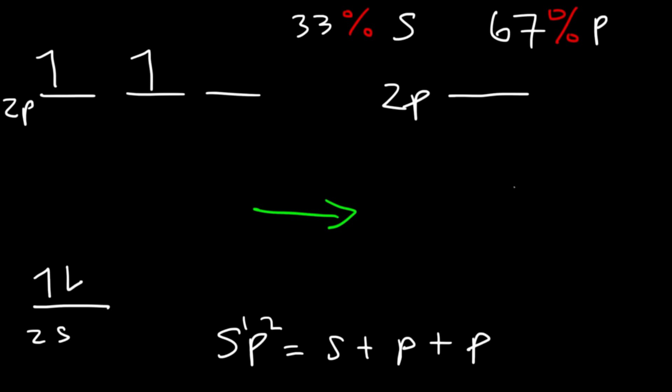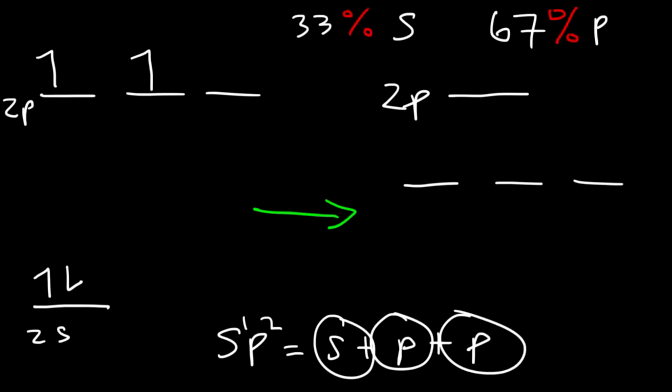But it should be less than sp3 in terms of proximity to 2p. These three orbitals will have the same energy. Since we use three orbitals to make them, we get three hybrid orbitals. We place one electron in each of the three sp2 hybrid orbitals.